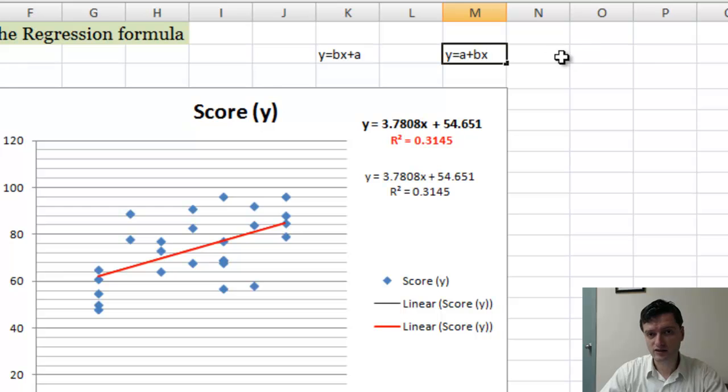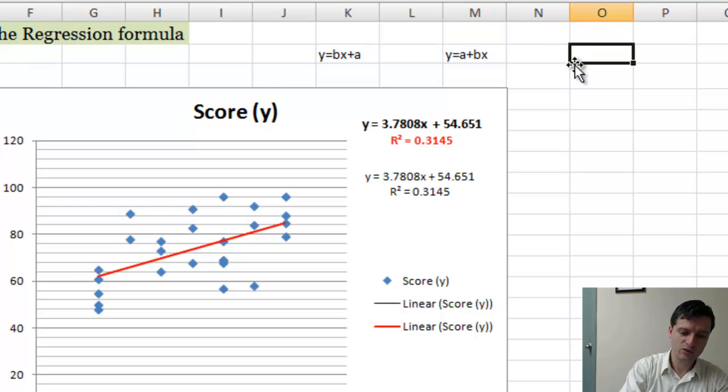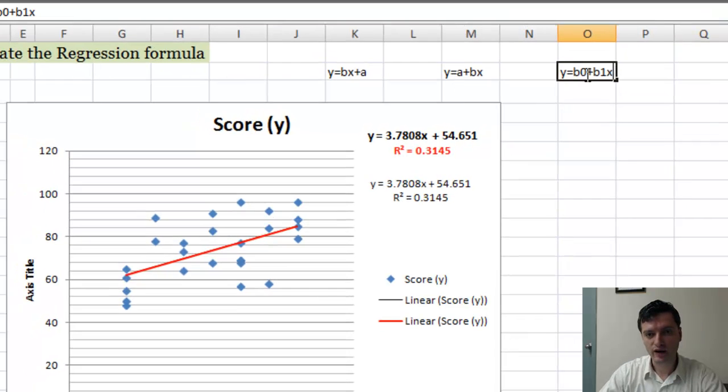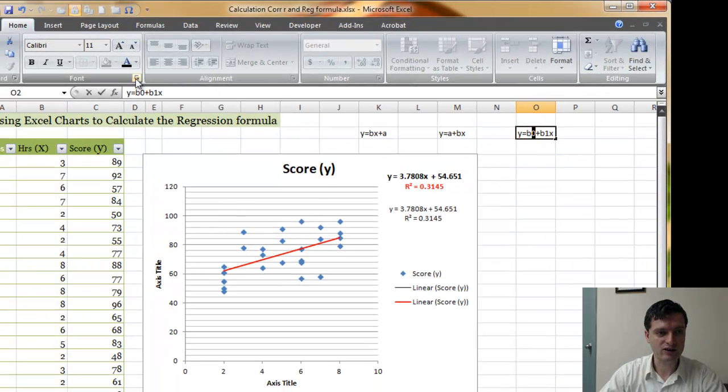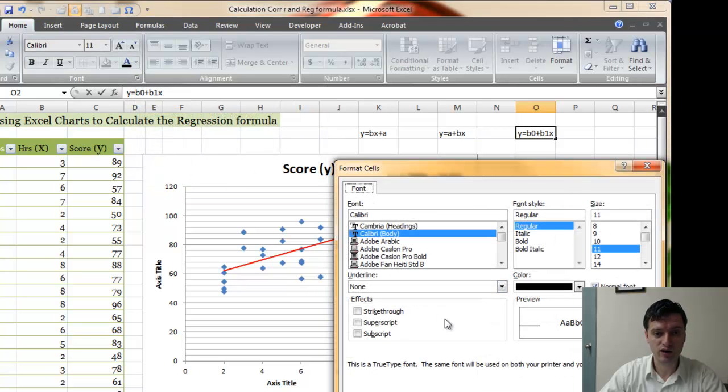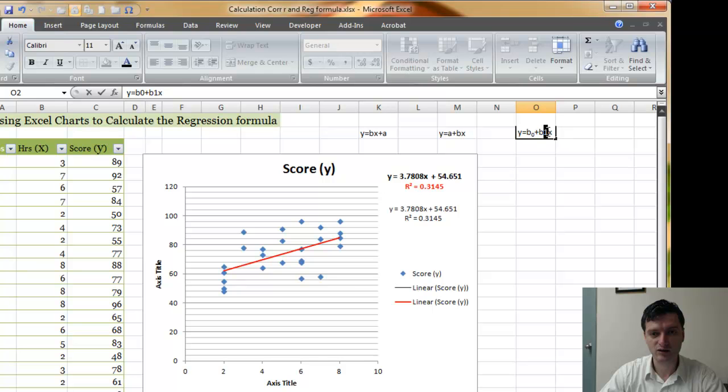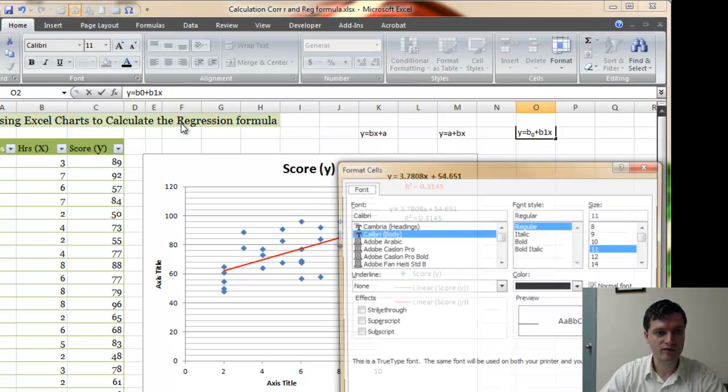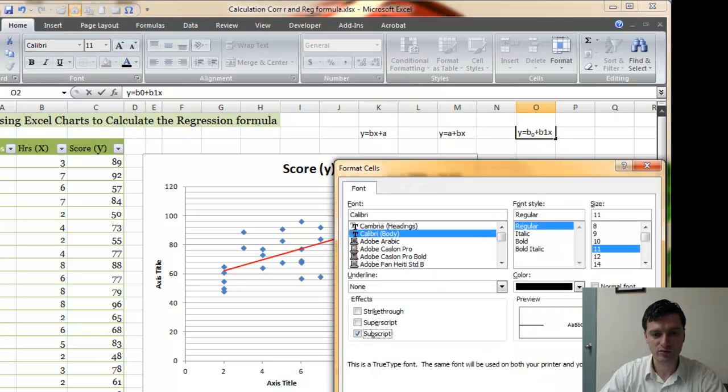Also, in other statistical textbooks or maybe somewhere else online, you would see the regression equation for only one independent variable written down as Y equals B0 plus B1 times X, where B0 is subscript, and B1 is subscript.